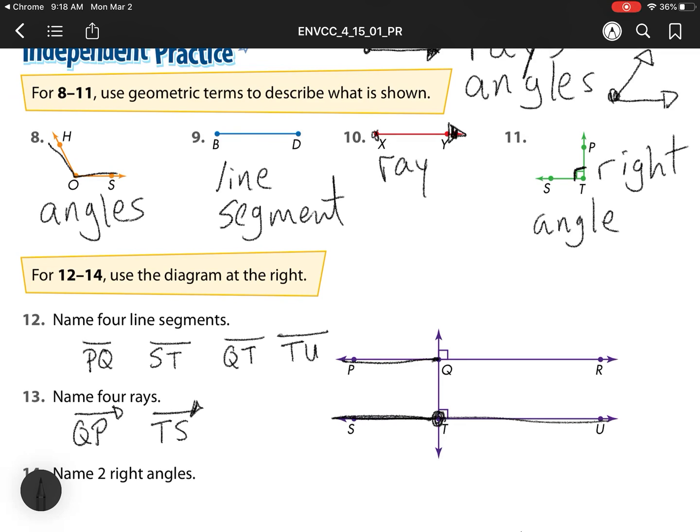I also have Q to R, so I start at Q and I went to R. And my next one, I'm going to start with T and go to U. So I start at T and then I go to U.